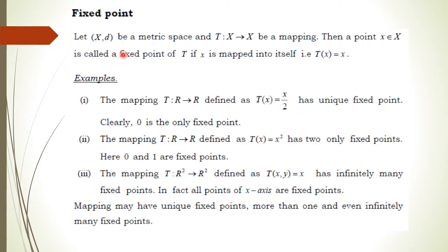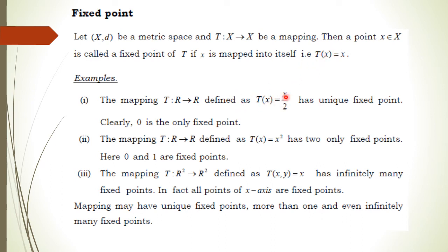Now the definition of a fixed point: let (X, D) be a metric space and T any self-mapping. A point X from the set X is said to be a fixed point of T if X is mapped to itself, meaning T(X) = X. For example, if T is defined from the real numbers to the real numbers by T(x) = x/2, then clearly T(0) = 0, so 0 is the fixed point of this mapping.